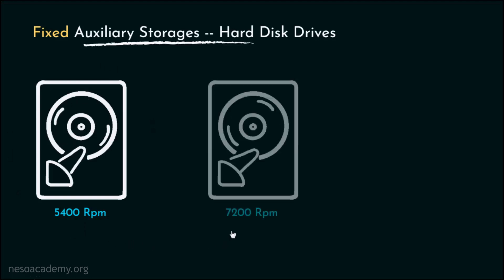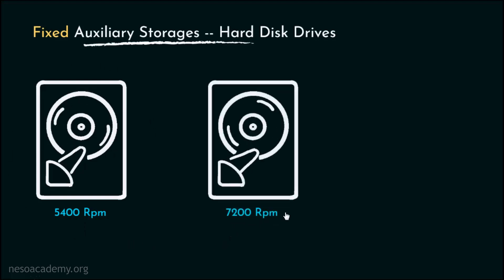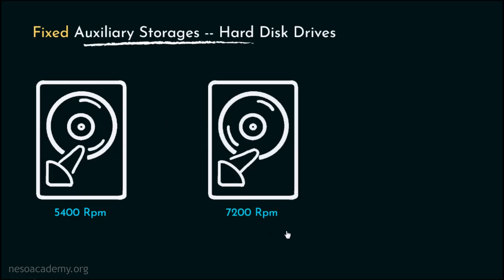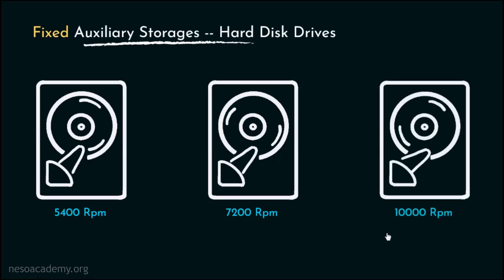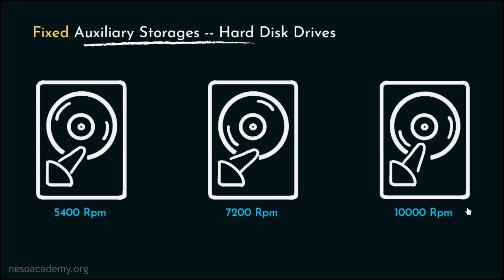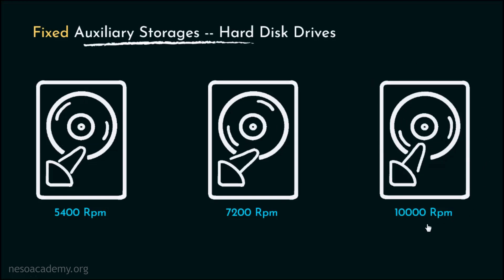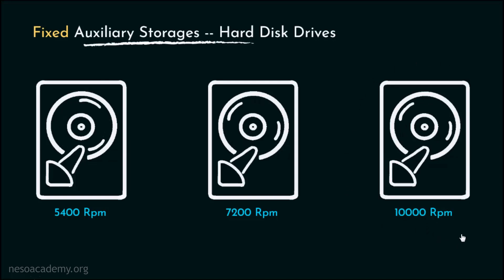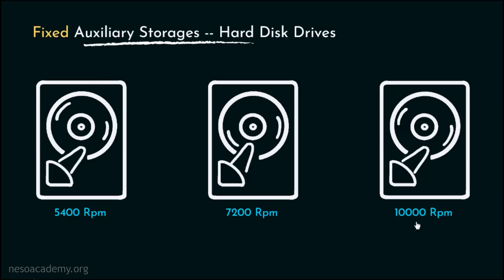The next one is the 7200 rpm category, typically used in desktop workstations. Finally, there are hard disks of 10,000 rpm, which were popular among higher-end hard drives. However, the emergence of solid state drives or SSDs reduced the popularity of these.